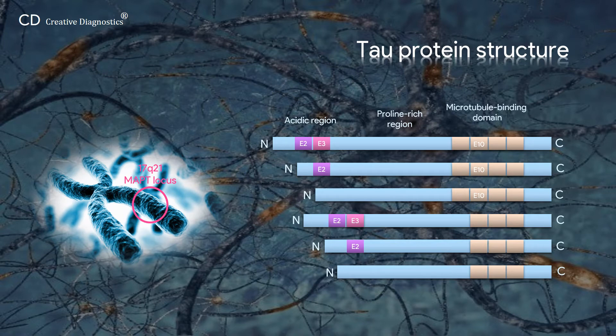The microtubule binding domain is responsible for Tau binding to microtubules. It has 4 repeat domains known as microtubule binding repeats R1, R2, R3 and R4, each of which contains a conserved consensus motif KXGS that can be phosphorylated at serine, resulting in the destabilization of the neuronal cytoskeleton.